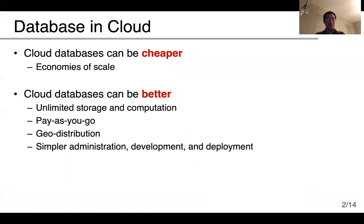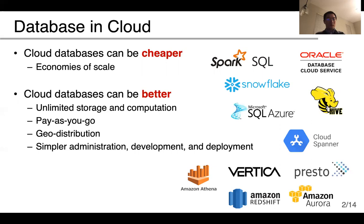Today, many database systems are moving to the cloud. Cloud databases can be cheaper than on-prem databases, primarily due to economies of scale, where cloud service providers can substantially reduce costs by deploying servers in millions. Meanwhile, cloud databases can also be better because the cloud has virtually infinite storage and computation resources, offers a pay-as-you-go model, can support geo-distribution, and offers simpler administration for end users. In recent years, a large number of cloud databases have emerged for both transaction processing and data warehousing, and we expect this trend to continue.